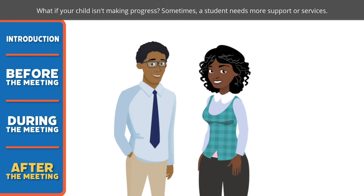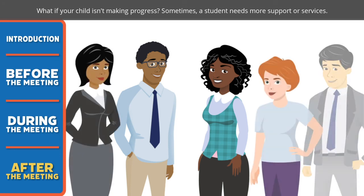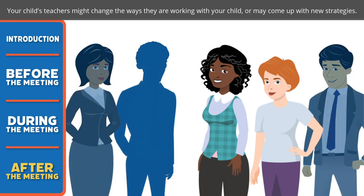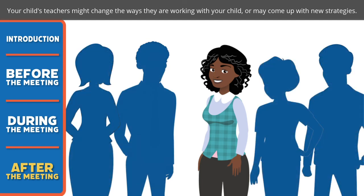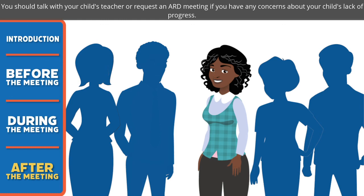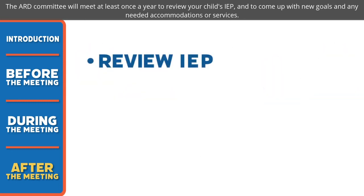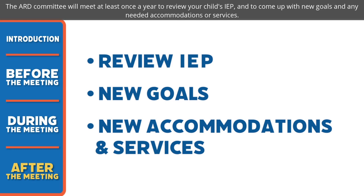What if your child isn't making progress? Sometimes a student needs more support or services. Your child's teachers might change the way they are working with your child or may come up with new strategies. You should talk with your child's teacher or request an ARD meeting if you have any concerns about your child's lack of progress. The ARD committee will meet at least once a year to review your child's IEP and to come up with new goals and any needed accommodations or services.